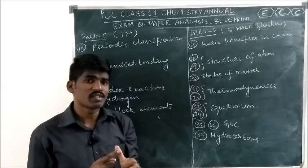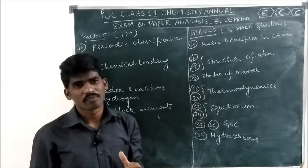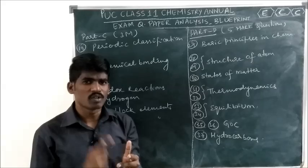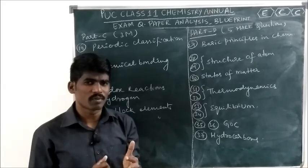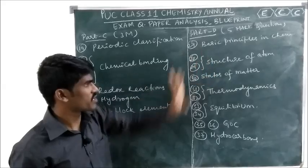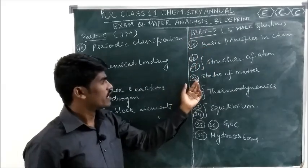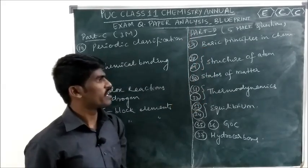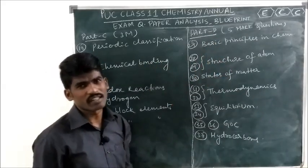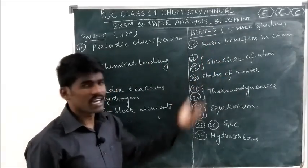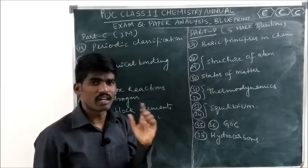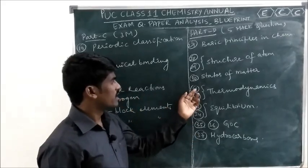Also focus on numericals based on the line spectrum of hydrogen, Hund's rule, Aufbau principle, Pauli's exclusion principle, and electronic configurations of various elements — you will get these in Structure of Atom for 5 marks. Question 30 is from States of Matter. For 5 marks from States of Matter, you will get the Kinetic Molecular Theory of Gases, or the ideal gas equation — how to derive it — and numericals based on the ideal gas equation.